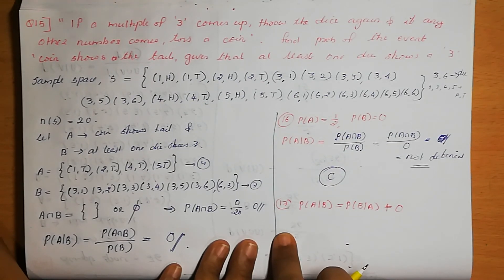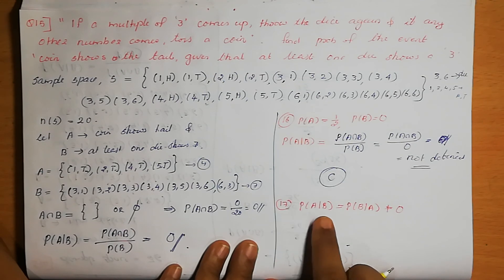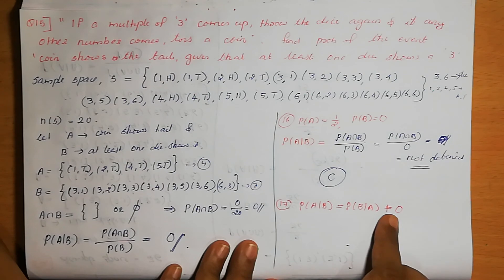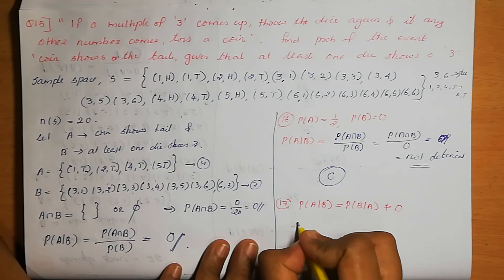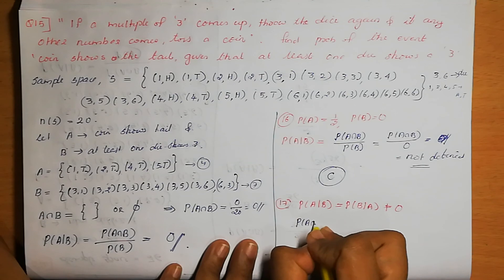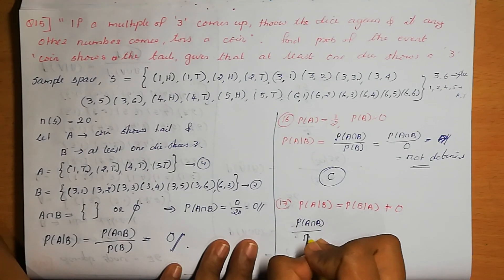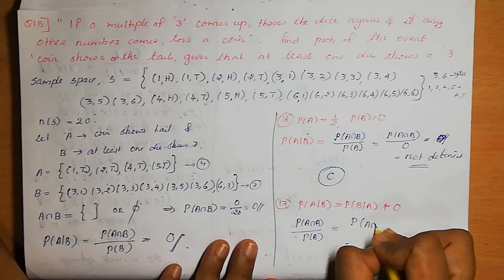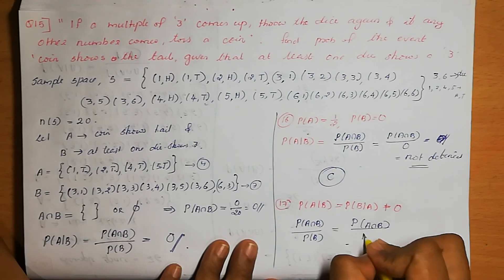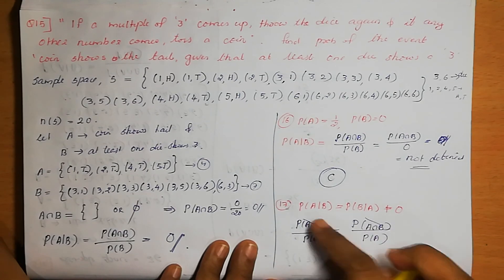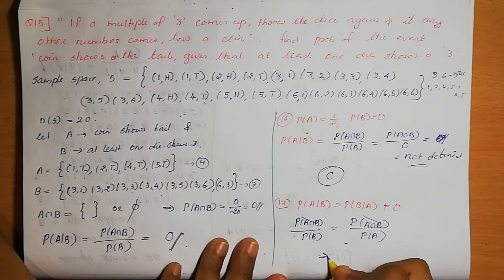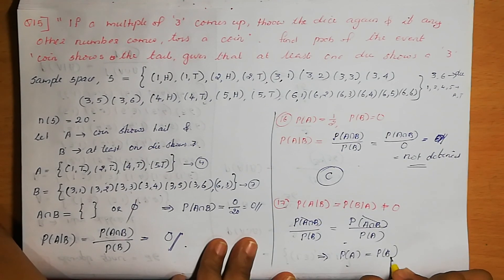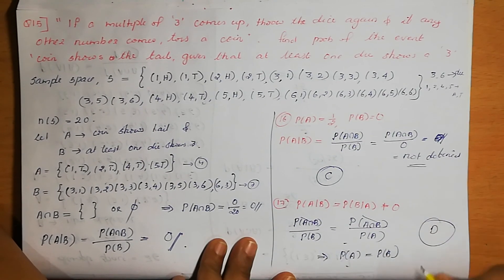Question number 17: If A and B are events such that P(A|B) = P(B|A) and both are not equal to 0, then P(A|B) = P(A∩B)/P(B) and P(B|A) = P(A∩B)/P(A). Setting these equal and cross-multiplying gives P(A) = P(B). Option D is the correct answer.